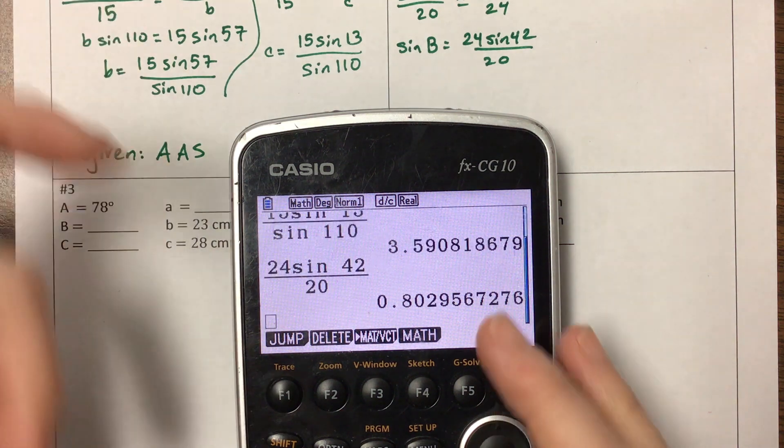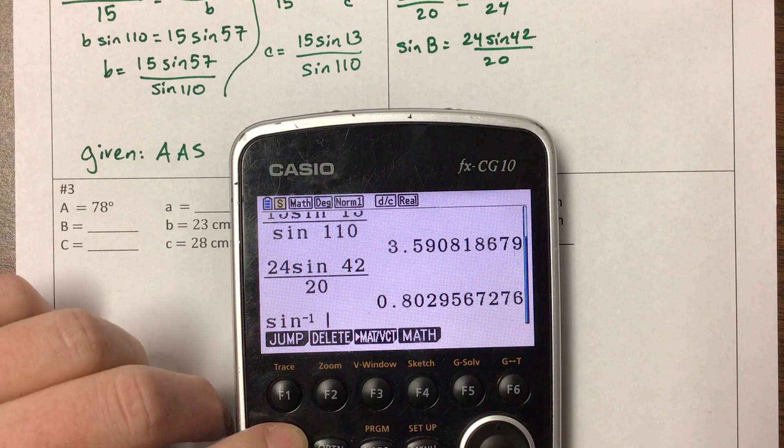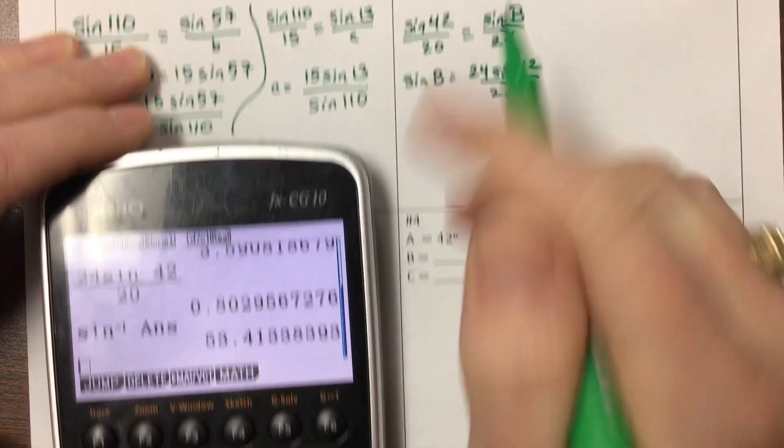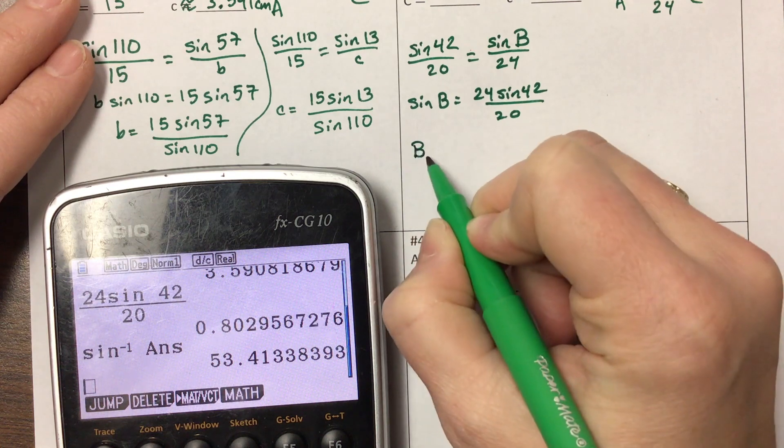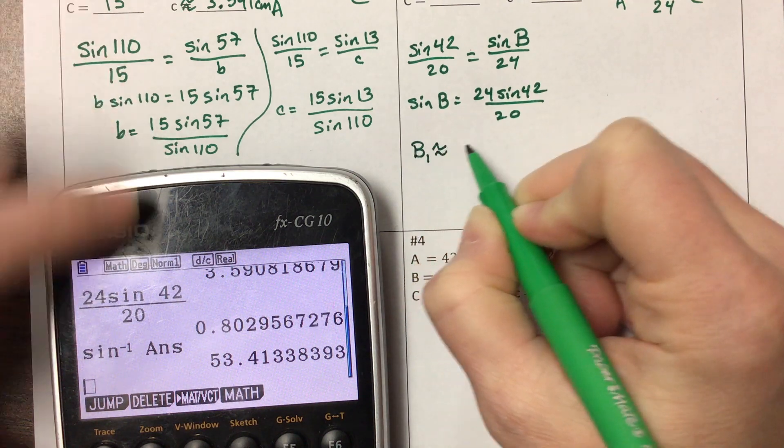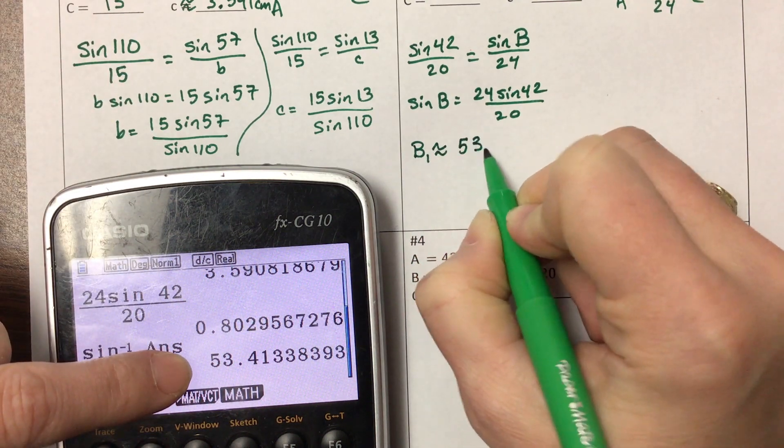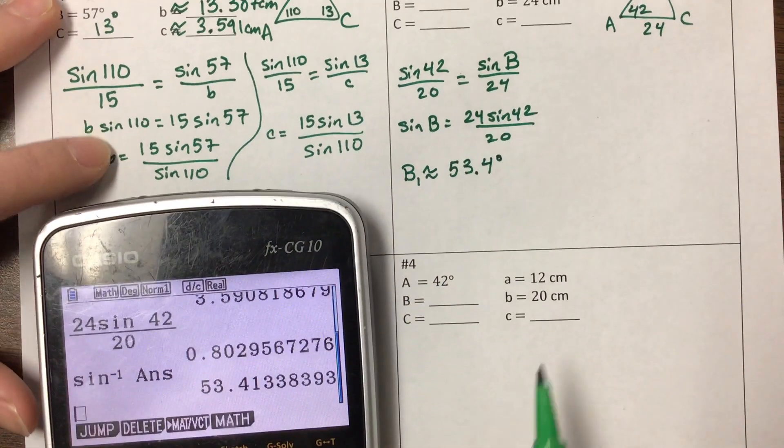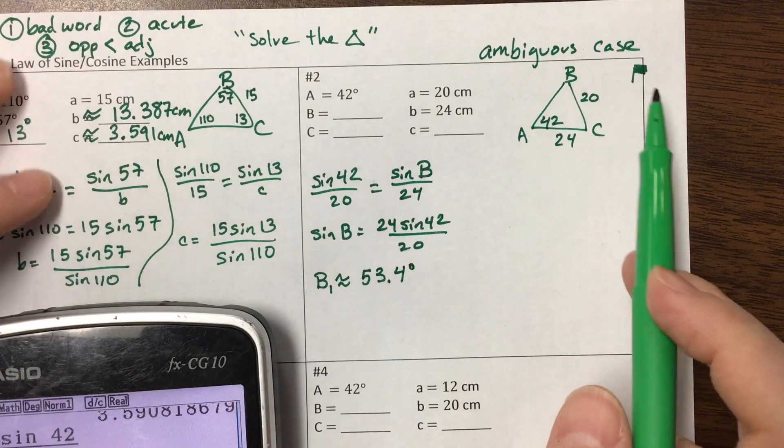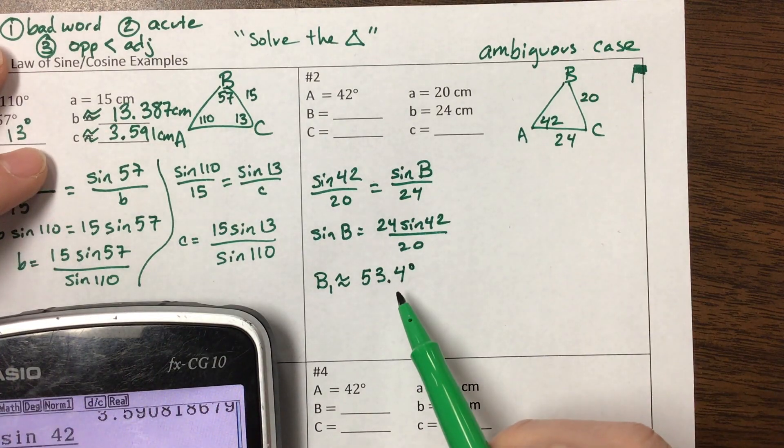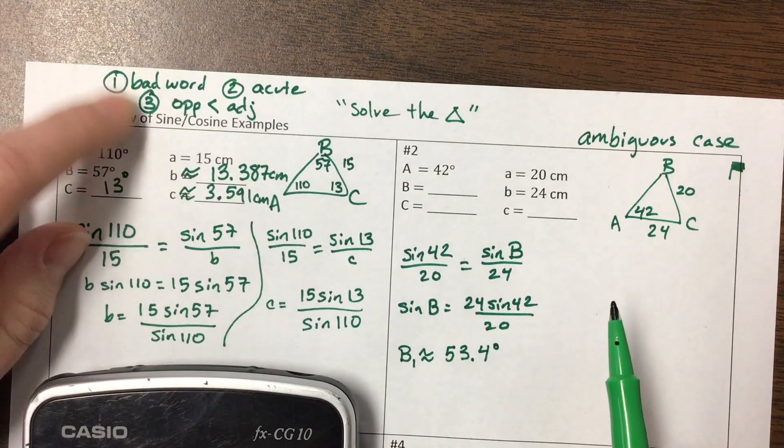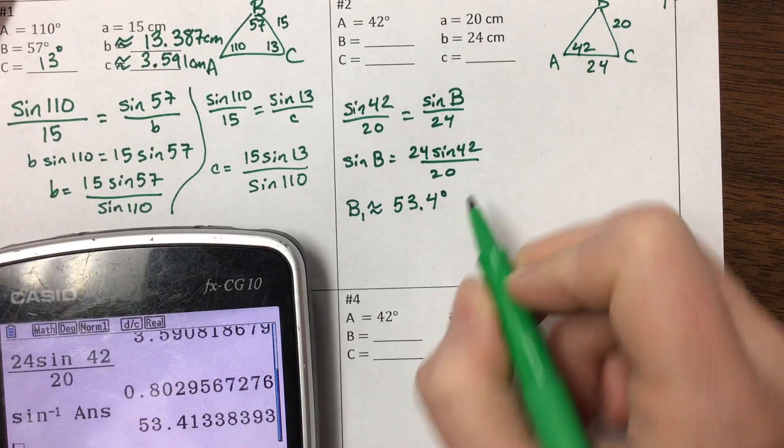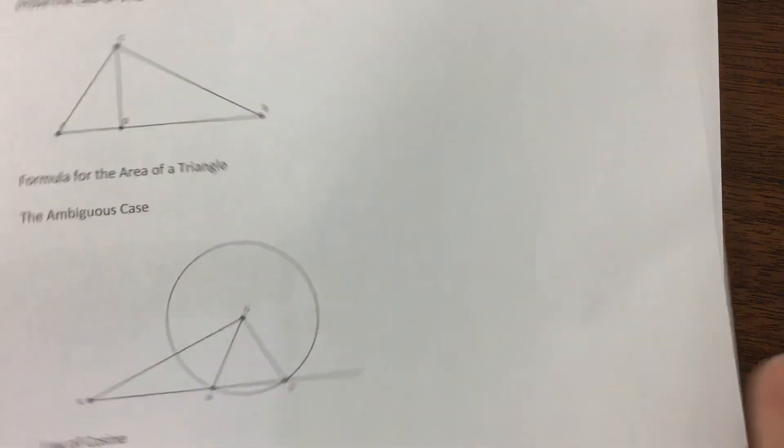Okay, that's what it was at. 24 sine of 42 all over 20. And now, don't forget, I always do second sine of that answer. And so I just found that angle B, and I'm going to call this B sub 1, is approximately 53.4 degrees. And the reason I'm calling it B sub 1 is we had already flagged this one. If it gives us one triangle, when all three of these things are met and it gives us one triangle, it actually is going to give us two.